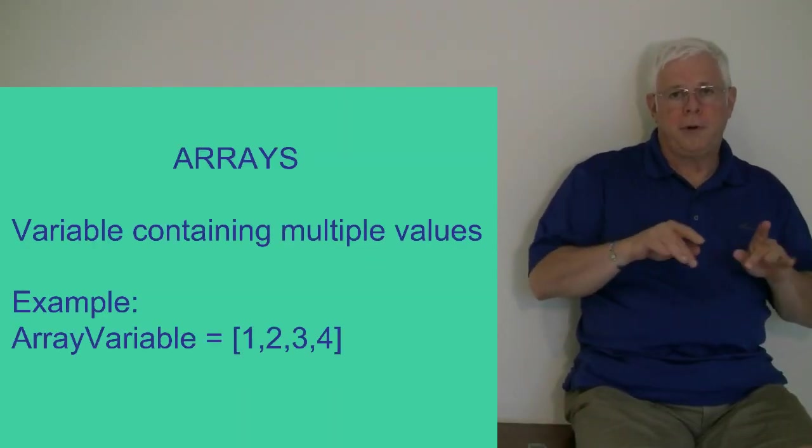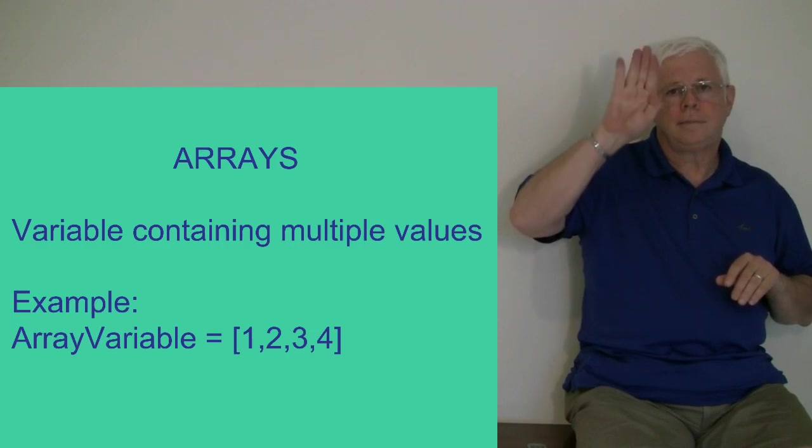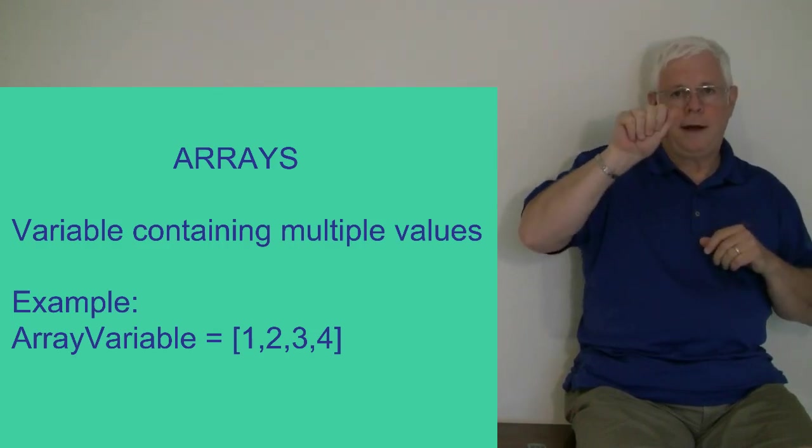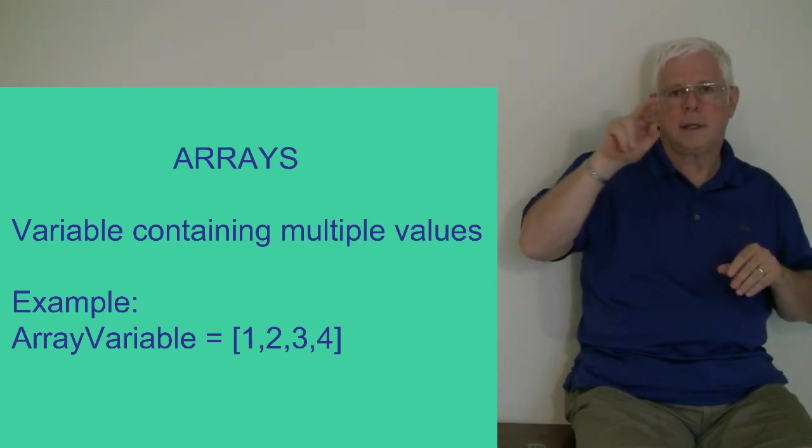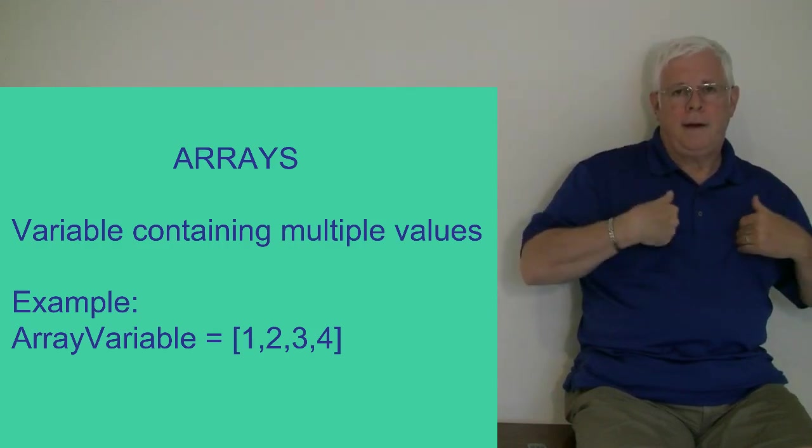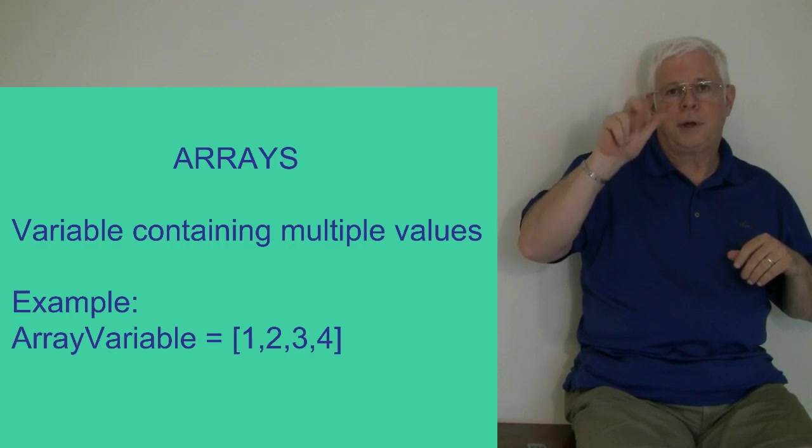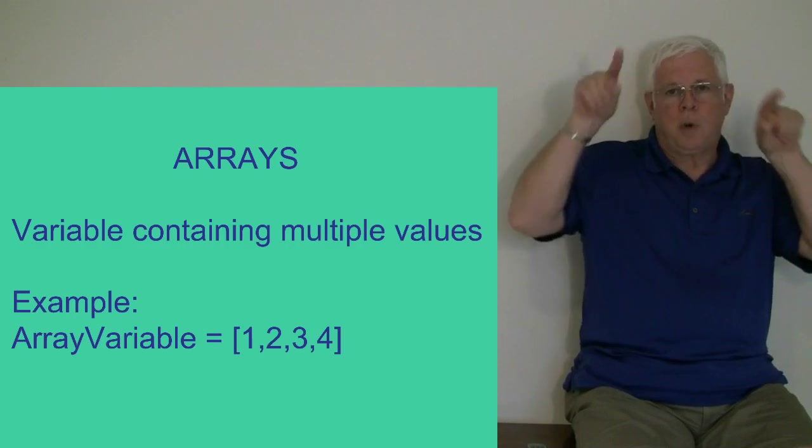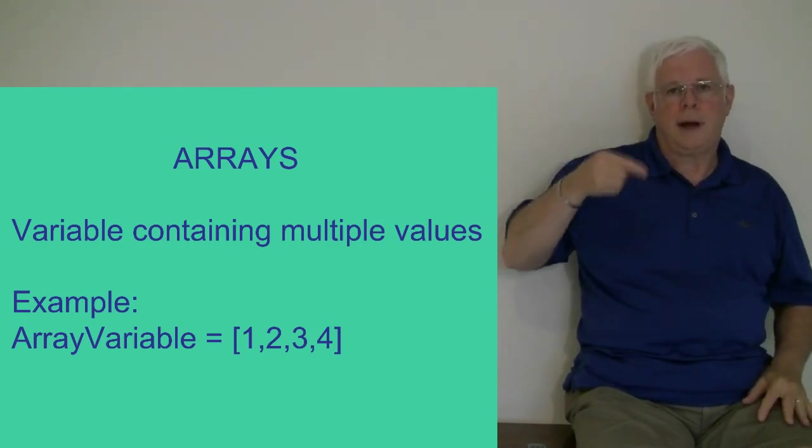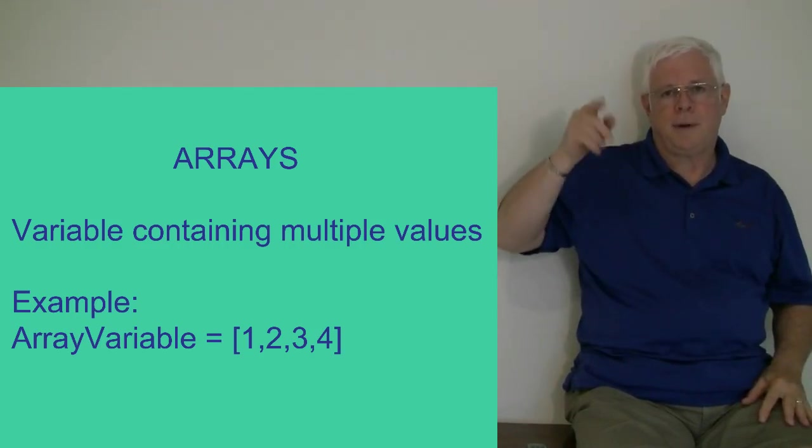Normally a computer variable has one value, but in arrays you have multiple values. In the example shown, we have a square bracket surrounding one comma two comma three comma four.